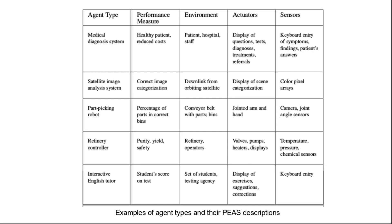So these are the PEAS descriptions for five different types of agents. With that, I would like to end my class today. In this class we saw what is a rational agent, and to determine whether an agent is rational or not we need to have a performance measure, and it is important to specify the performance measure correctly. We also looked at the task environment and the PEAS description for different agents. See you in the next class, bye.